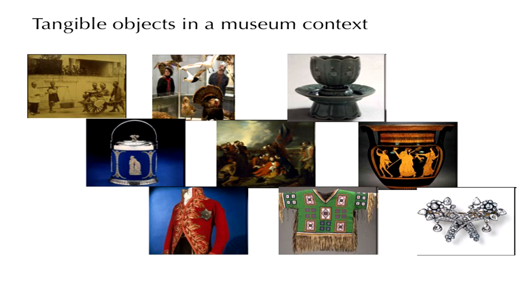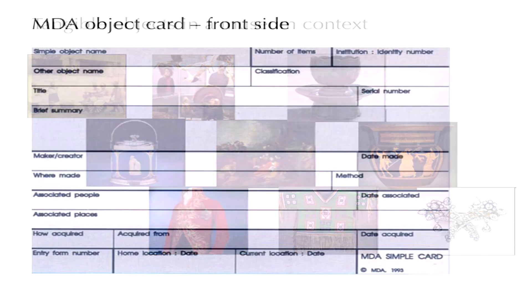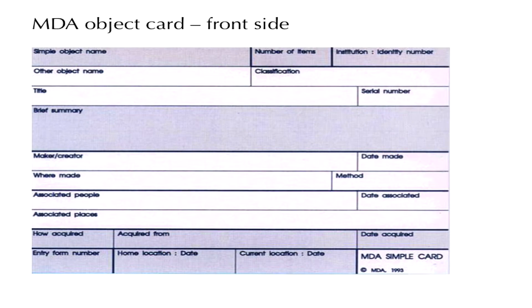And these are customarily recorded by the documentation department of the museum using specific cataloging systems. For instance, the Museum Documentation Association object card, here we see the front side of the object card, prescribes a number of fields that can be used in order to record specific information about each object, such as an object name, alternative object names, a brief description, the creator, where it was made, places associated with the history of this object, and so forth.